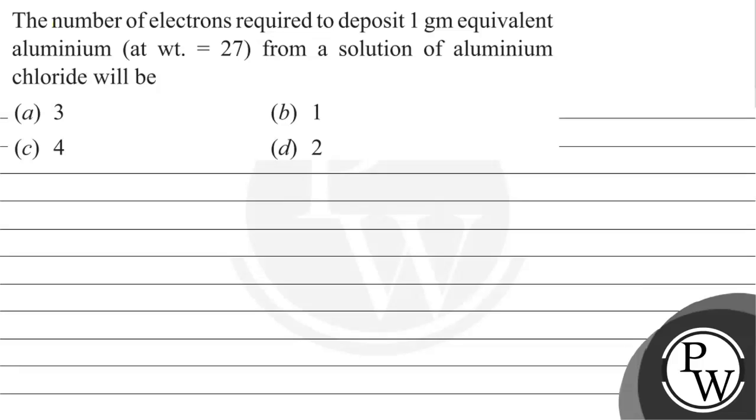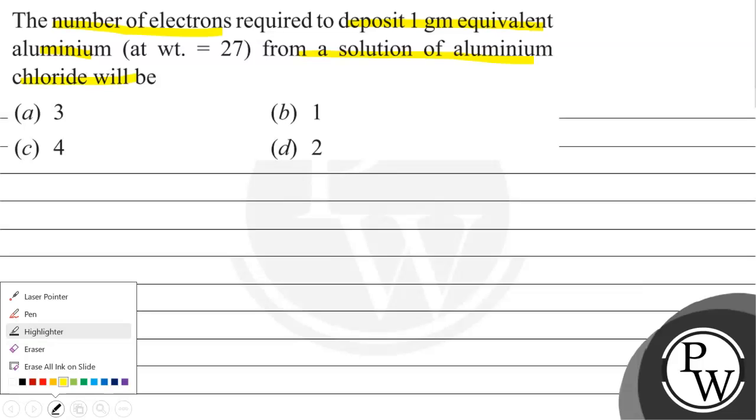Hello, let's read this question. The question says: the number of electrons required to deposit one gram equivalent of aluminium from a solution of aluminium chloride will be? There are four options available. Before starting the question, let us see what is the key concept.